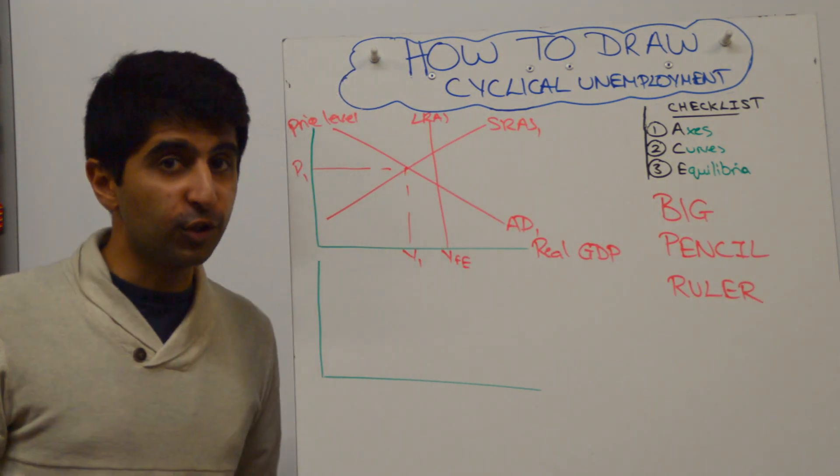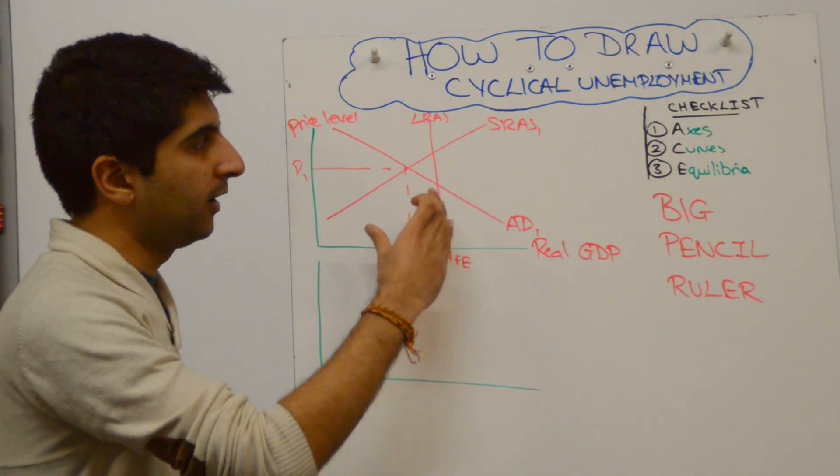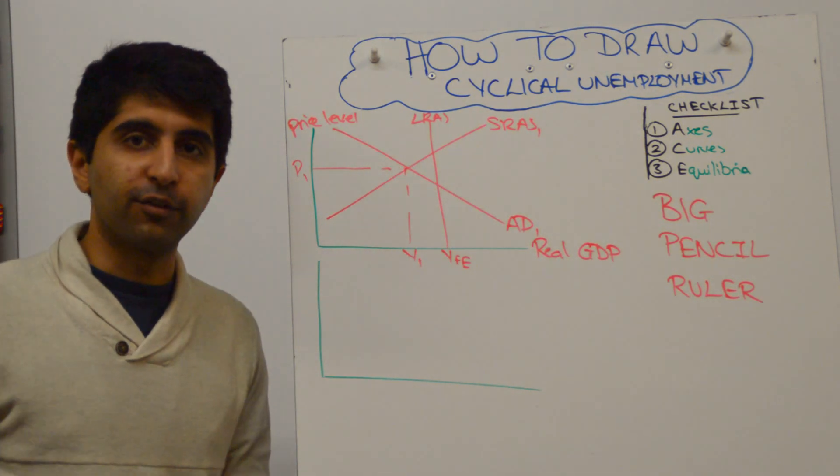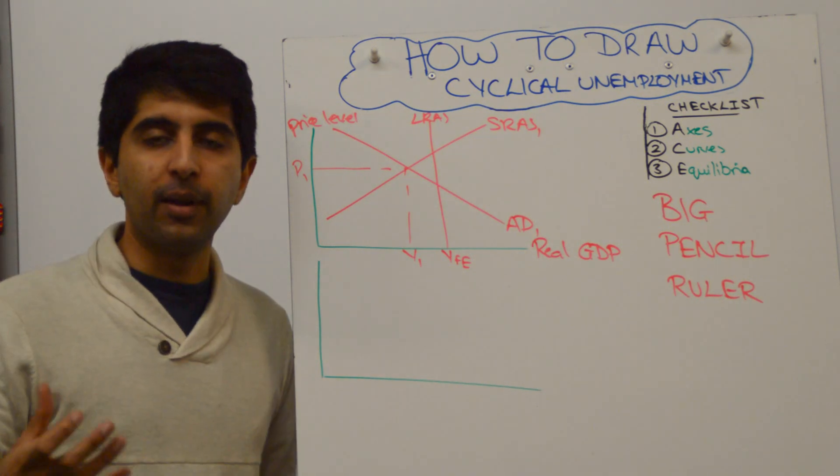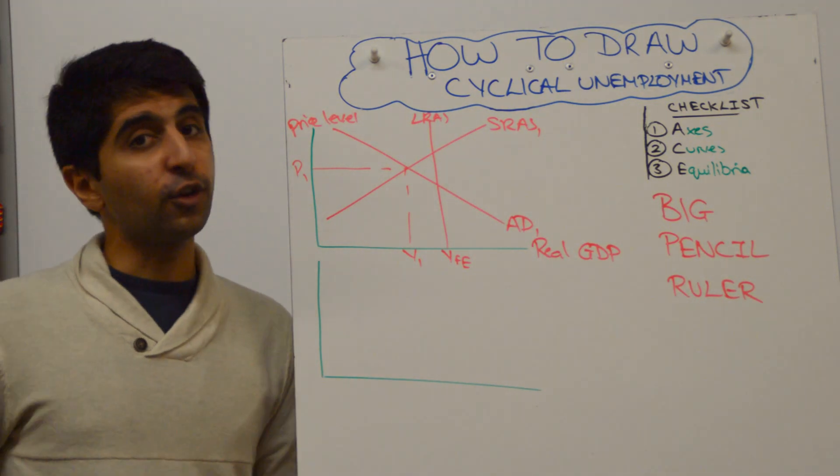That's your full employment level of output and currently the economy is at Y1 and P1. Now, if you wanted to, you could stop there. What you've just shown here is a deflationary gap with aggregate demand or the current level of growth less than the full employment level of growth. Hence, there must be some cyclical unemployment.